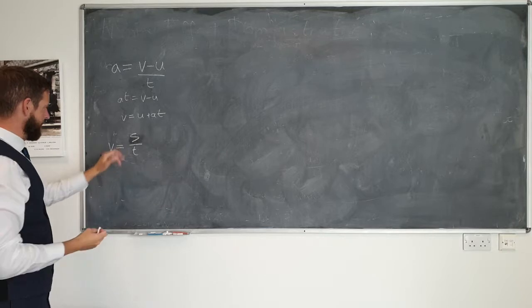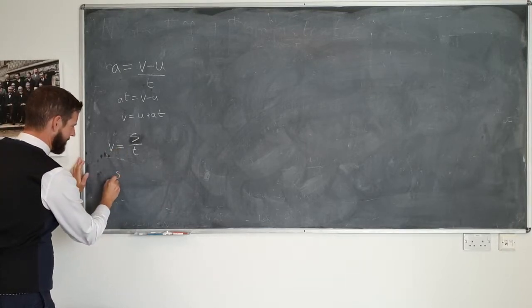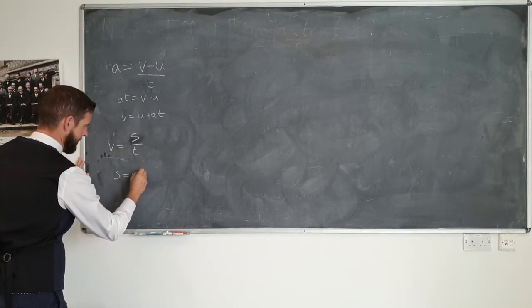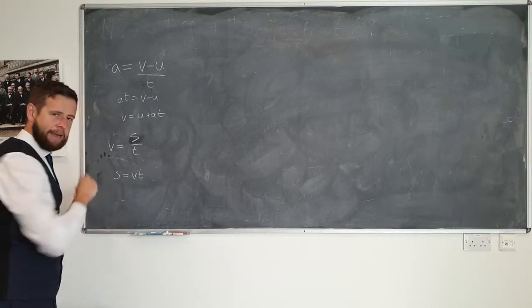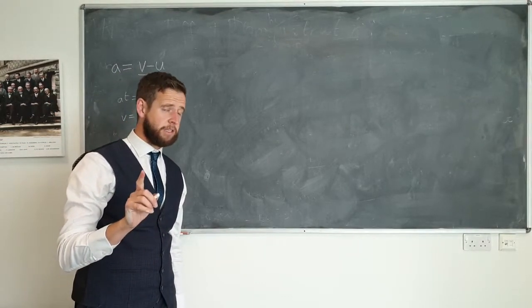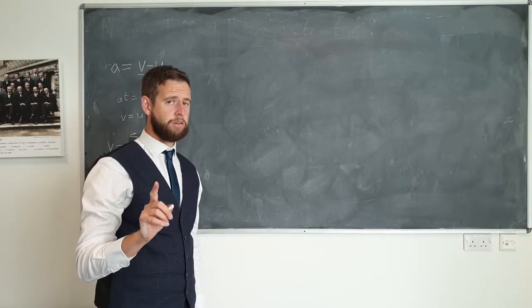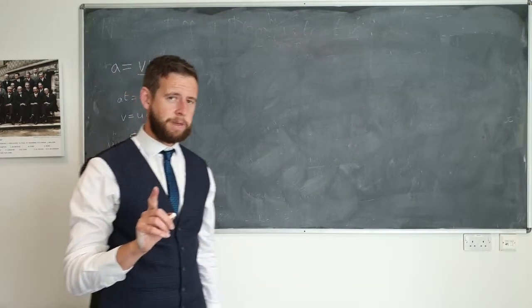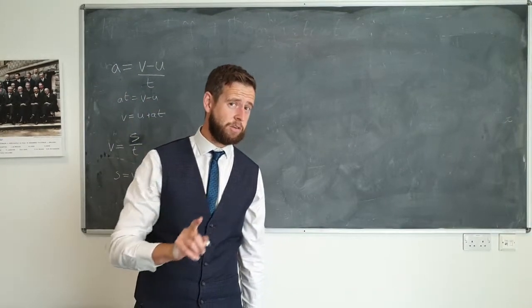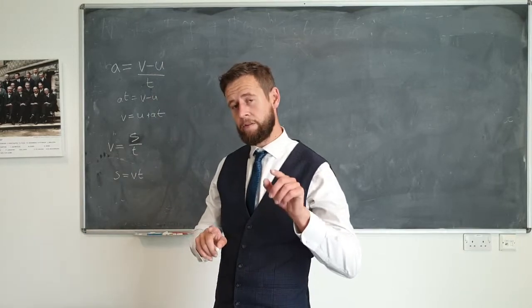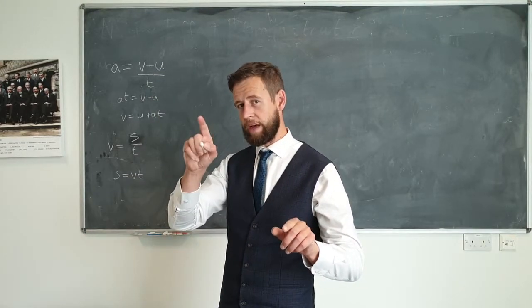We can rearrange this to have displacement is velocity times time. This is correct so long as the velocity is constant. If the velocity is not constant, then this is no longer true. These equations are especially useful when the velocity is not constant, when it is changing from one value, U, to another value, V.